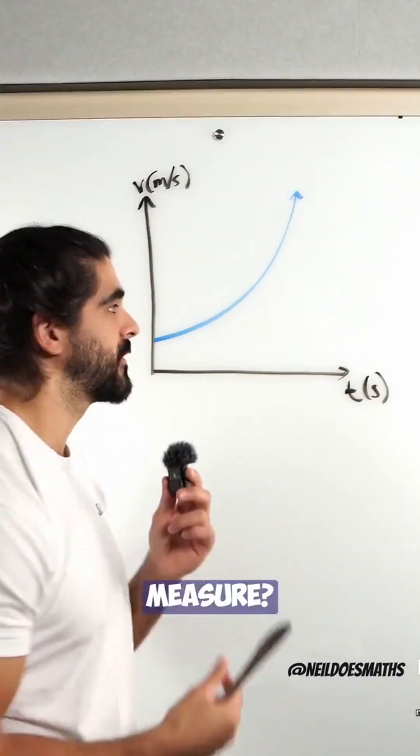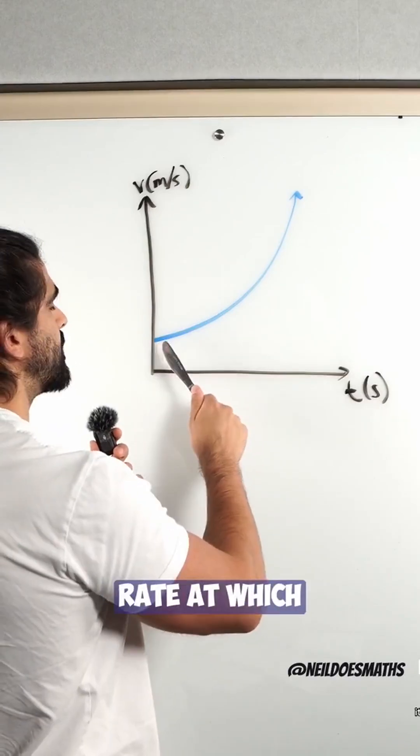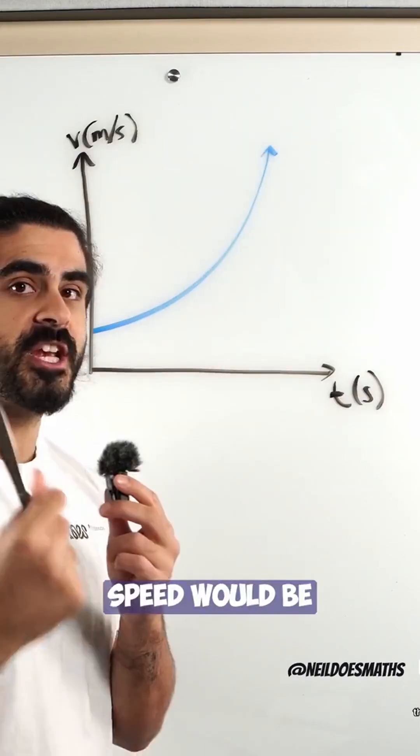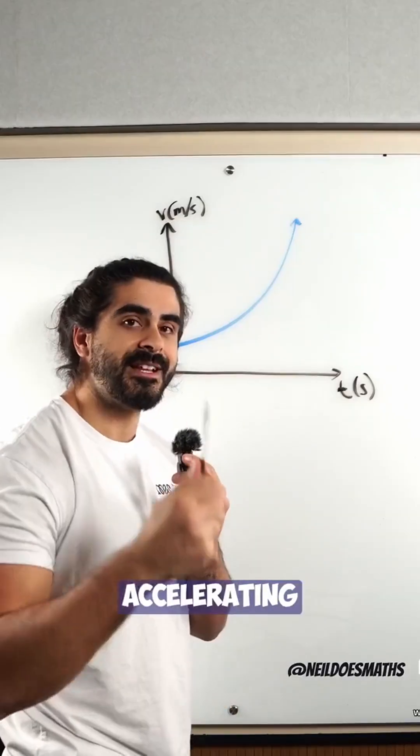What does acceleration measure? It measures the rate at which your speed is changing. So if it was a much steeper graph, the speed would be changing much faster, which means it's accelerating more.